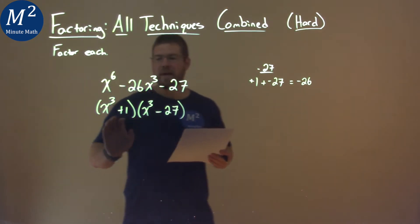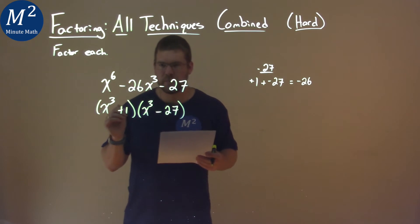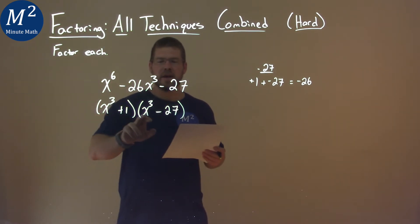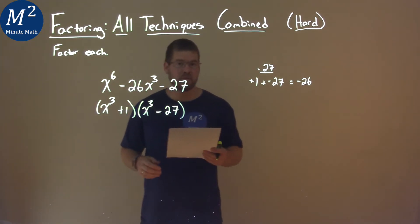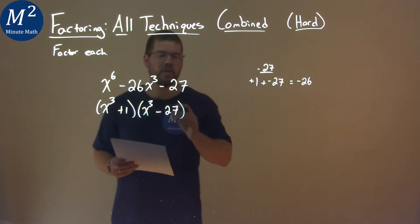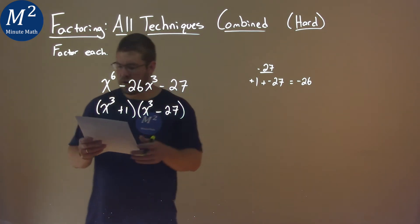Now we have two factors here. Notice that each one has x to the third power, and 1 can be written as 1 to the third power, and 27 can be written as 3 to the third power. So with that information, we can use the sum and difference of cubes.